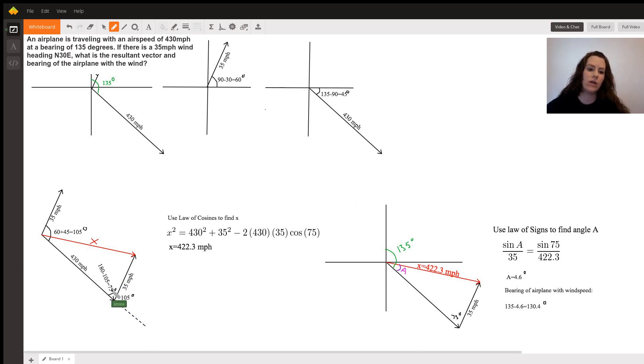Now we can find this angle because this is a straight angle, and a straight angle we know equals 180 degrees. So we can take 180 and subtract this 105, and that gives us 75 degrees between the two vectors.